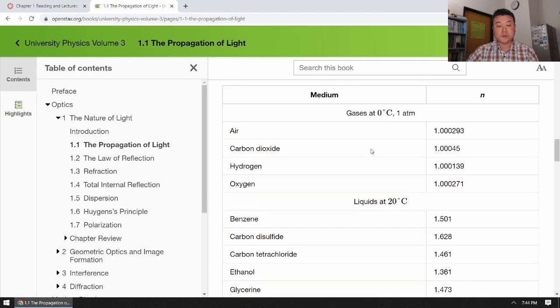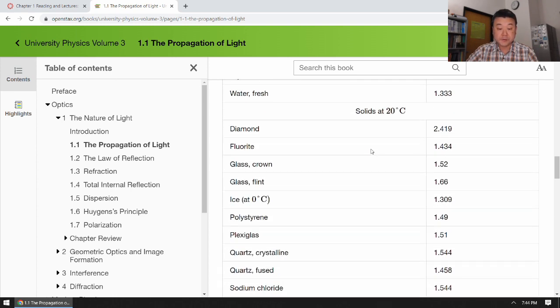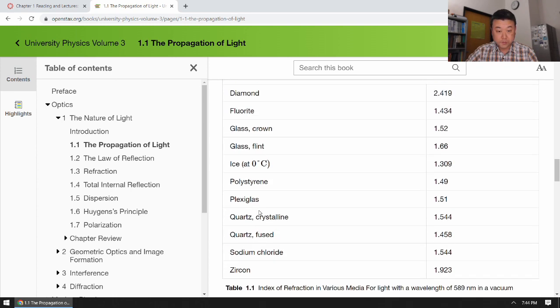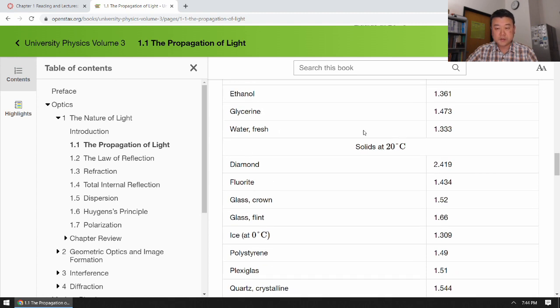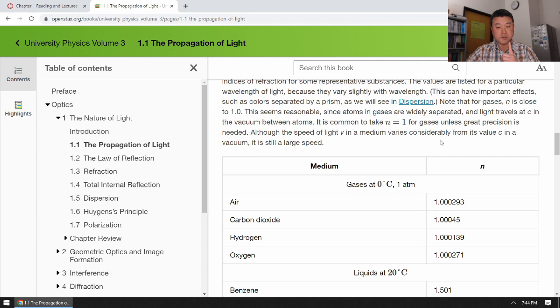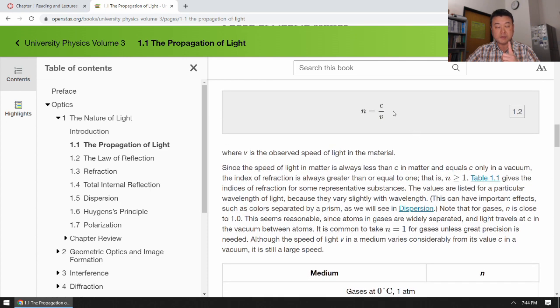So if you are looking for how much does the light slow down when it's in water, for example, this is where you would find it, 1.333. So the ratio of the speed of light in vacuum over speed of light in water is 1.333.